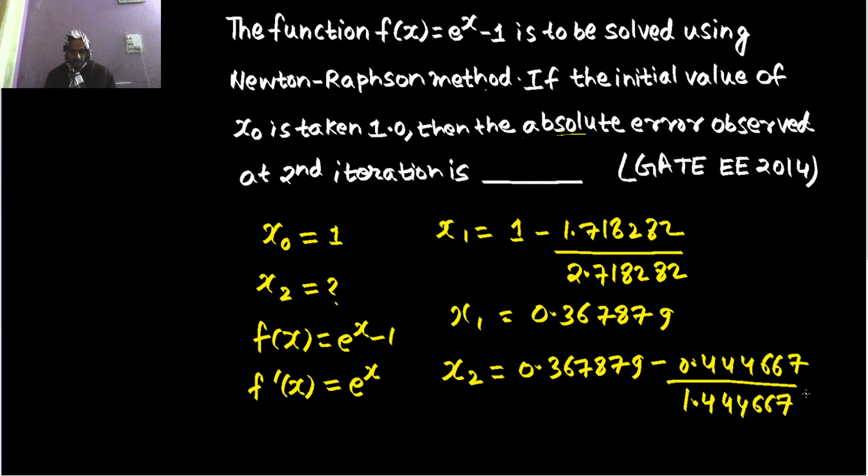Now I have to calculate the entire value, which is 0.367879 minus 0.444667 divided by 1.444667. So this is giving me 0.060080, and that's what I need because this is the value of x2.